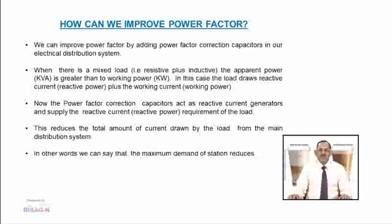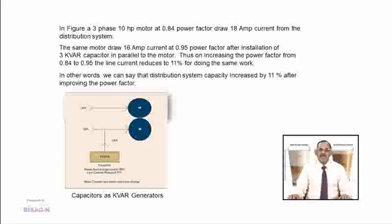In this case, the load draws reactive current (reactive power) plus working current (working power). Power factor correction capacitors act as reactive current generators, supplying the reactive power requirement of the load, which reduces the total current drawn from the main distribution system. For example, a 3-phase 10 HP motor at 0.84 power factor draws 18 amperes, but after installing a 3 kVAR capacitor in parallel, the same motor draws only 16 amperes at 0.95 power factor — a reduction of 11%.